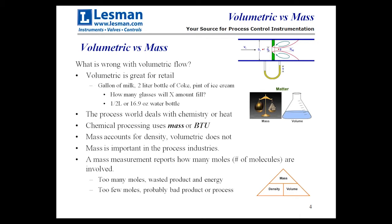There's an issue when you do volumetric measurement. Volumetric is absolutely great for retail — when you go to the store, you want to buy a gallon of milk or a 2-liter bottle of Coke. You want to know how many glasses that 2-liter bottle will fill. But the problem is when you go into the process world, which deals with chemistry or heat. Chemical processing wants to use mass units or BTU for heat. Volumetric just doesn't work because volumetric measurements do not take into account density, and it's critically important in the process industry to deal with mass or BTU, not volume.